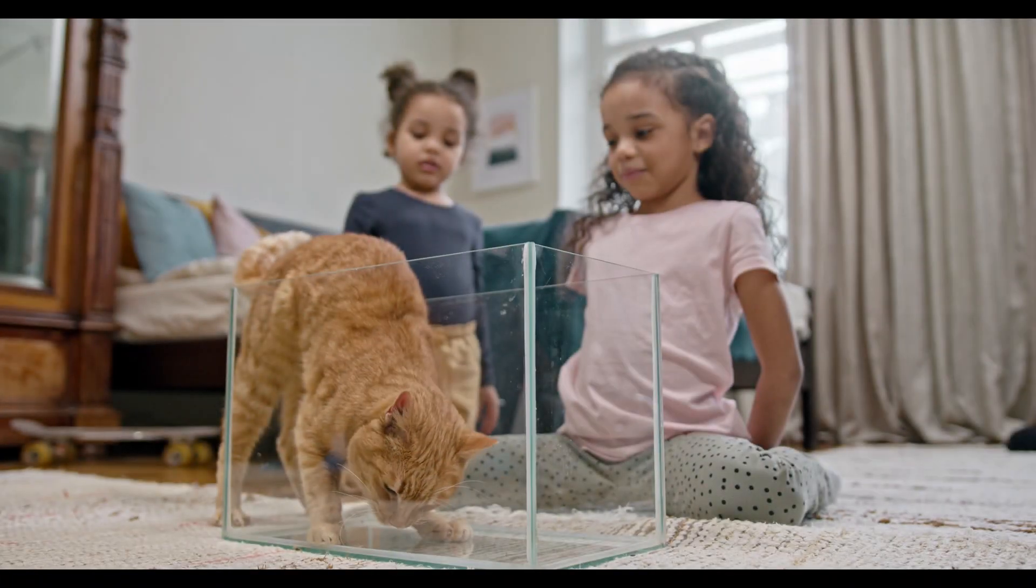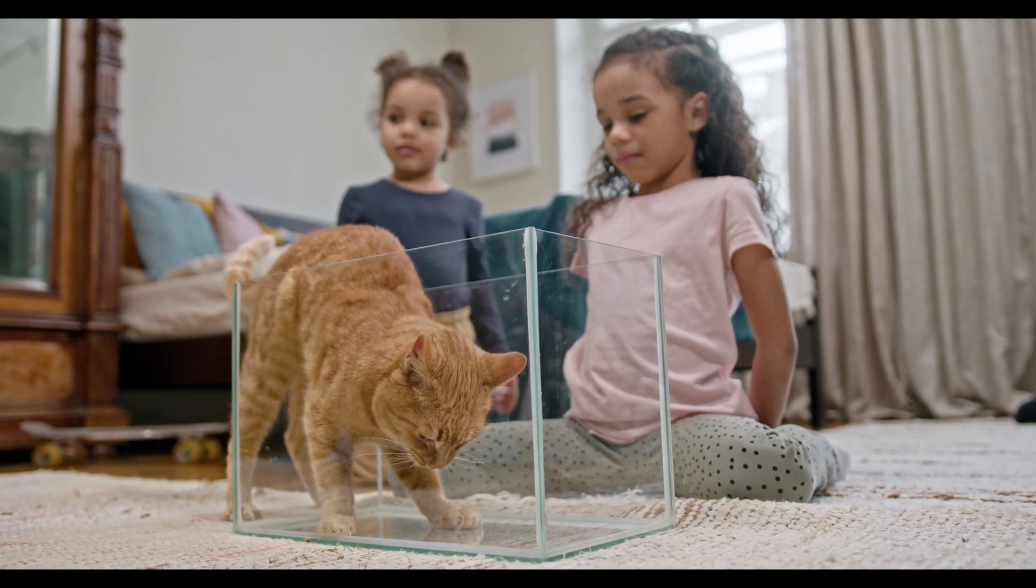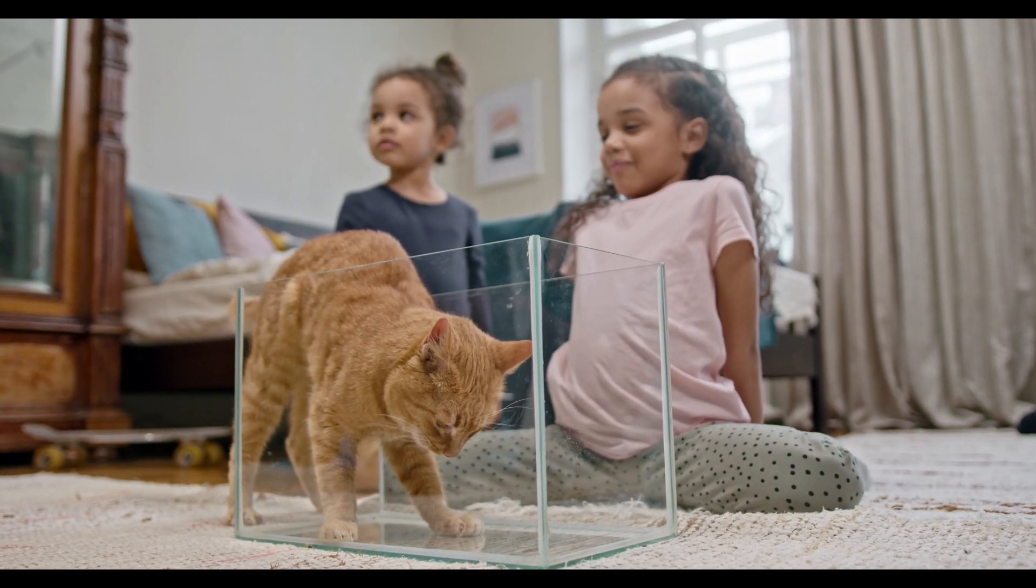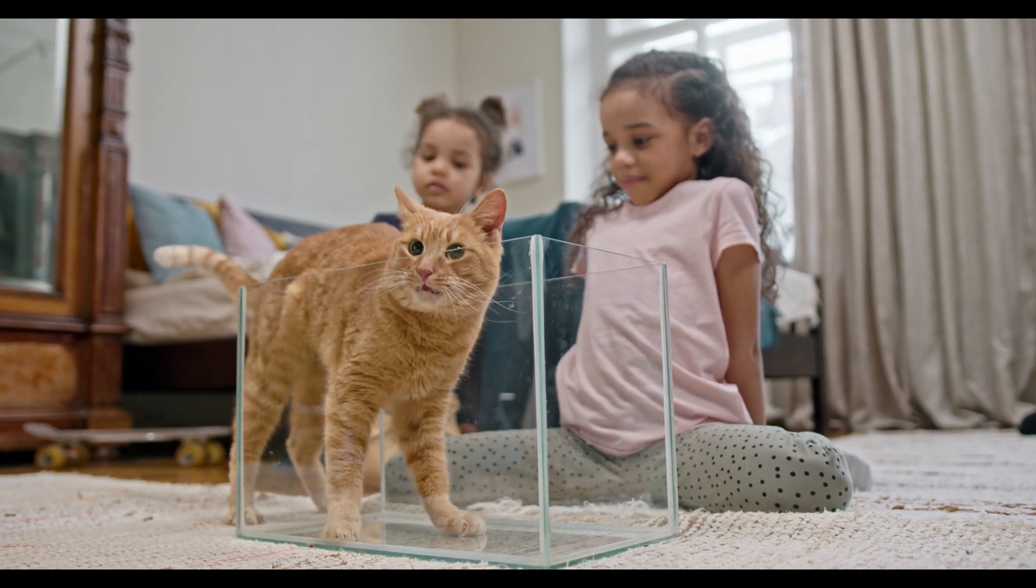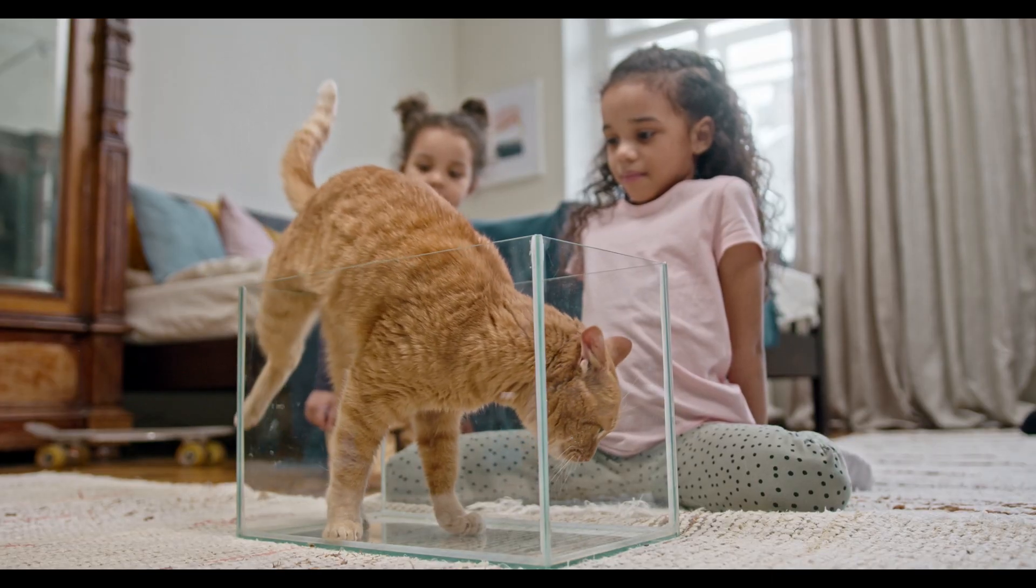The famous thought experiment proposed by physicist Erwin Schrödinger highlights the strange concept of superposition in quantum mechanics. In this scenario, a cat is placed inside a sealed box with a radioactive atom, a Geiger counter, a vial of poison, and a hammer set to release the poison if the atom decays. The decay of the atom is a quantum event, meaning it can both happen and not happen until observed.